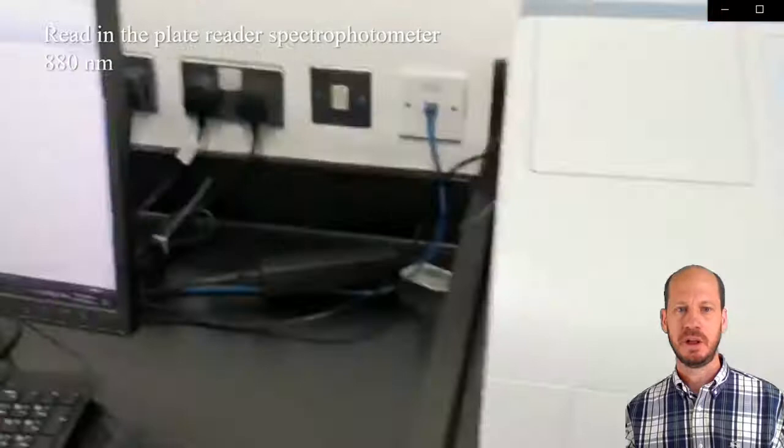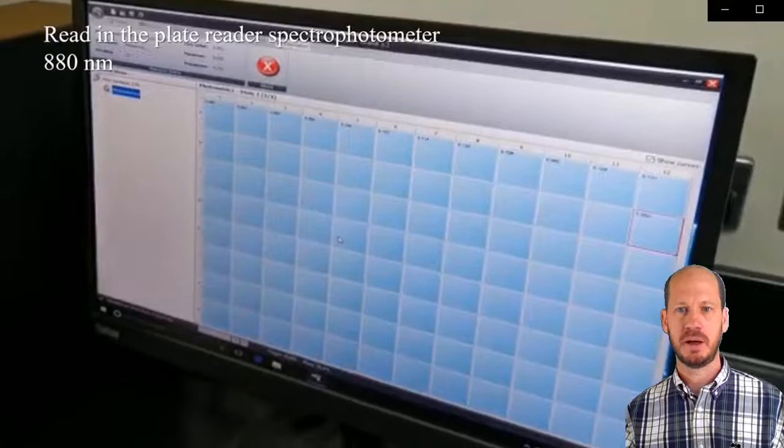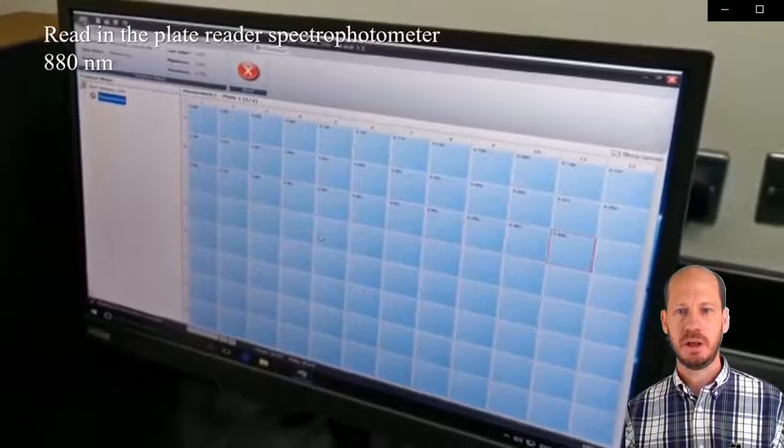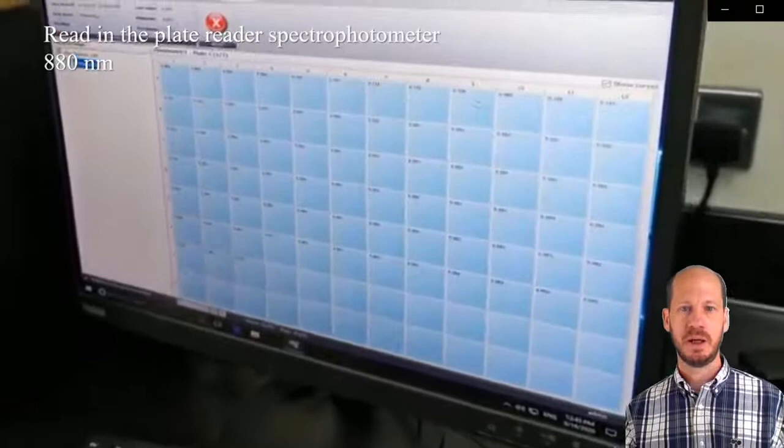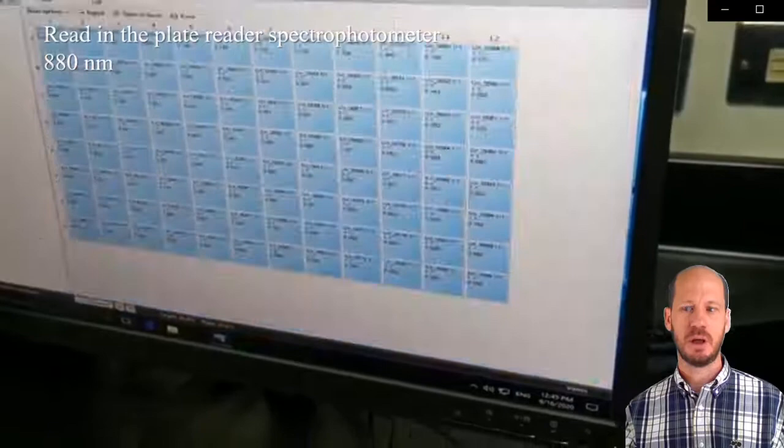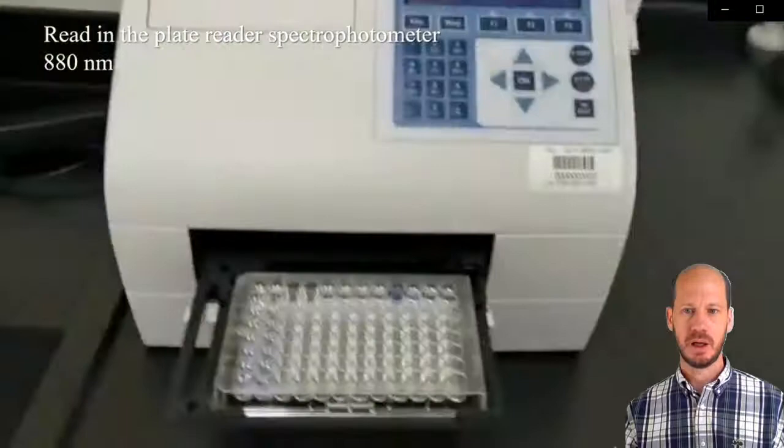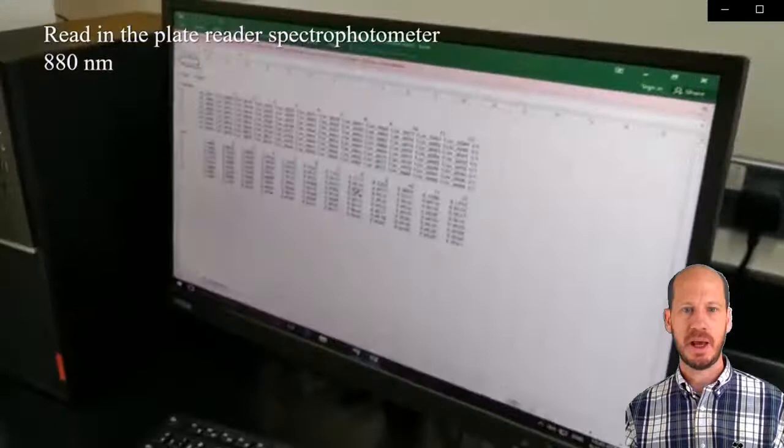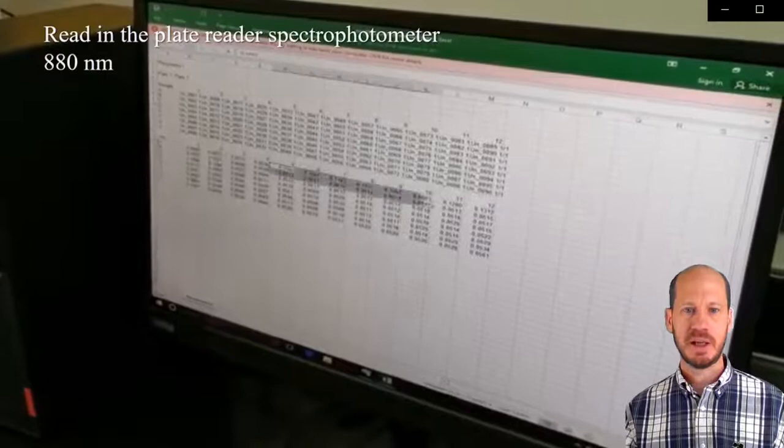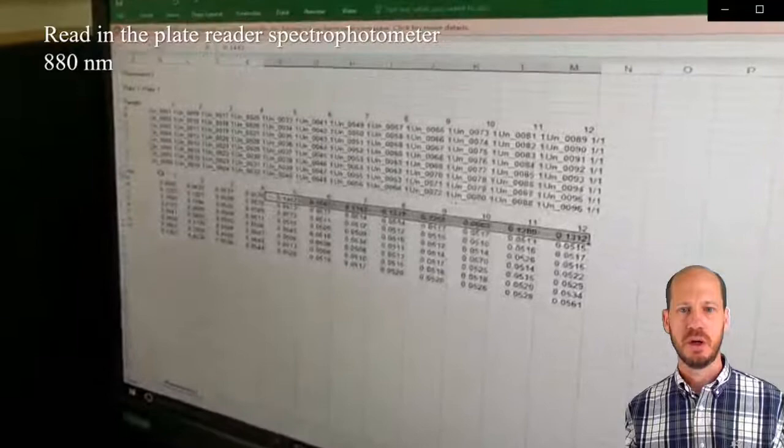When you press play, the machine will do the reading. The plate will go in and the readings will start. As the equipment starts reading, the data instantaneously appears on your screen. When the plate is finished reading, we have to open this data in Excel and work out the calculations. I prefer to do the calculations in Excel rather than in the software from the equipment.